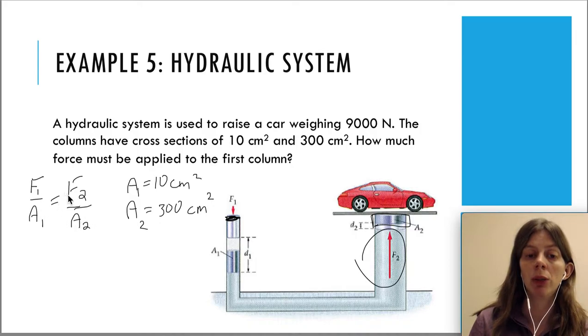You can see this when I rearrange my equation. We're looking for F1, the force applied to the first column. If we solve for F1 by multiplying A1 to both sides, we get F2 over A2 times A1.